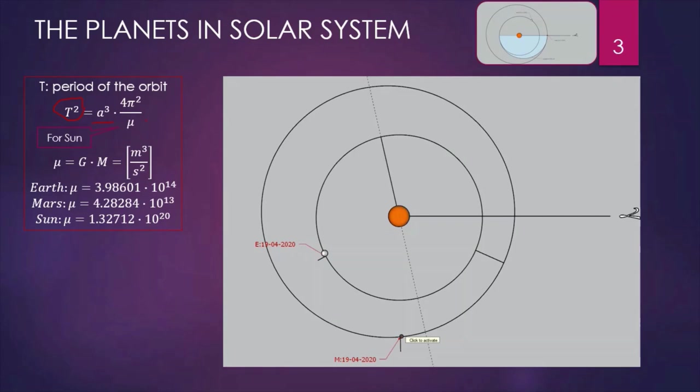By using the parameter Mi — which is the gravity constant of the planet, the product of the universal constant G and the mass M — here is displayed the gravity constant of the two planets, for the Earth and for Mars respectively. The reference date is 19th of April 2020, where the Earth and Mars are occupying the position displayed in the picture.